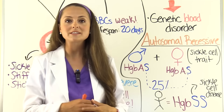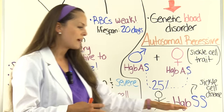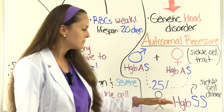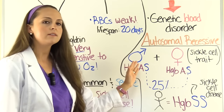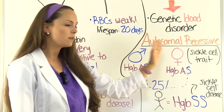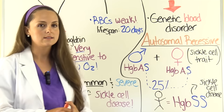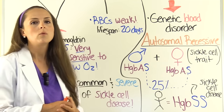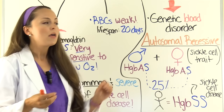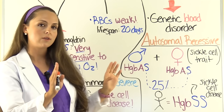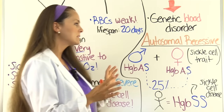Sickle cell anemia is an autosomal recessive disease. In order for a patient to have it, they must be homozygous — hemoglobin SS — receiving hemoglobin S from each parent. There is a 25% chance that the child will have hemoglobin SS. This is opposite of autosomal dominant where one parent gives the abnormal gene. In sickle cell disease, the parents are usually just carriers — they have sickle cell trait and don't normally show signs and symptoms.